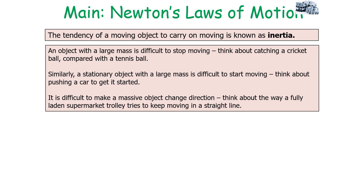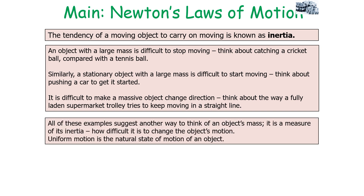The tendency of a moving object to carry on moving is known as inertia. An object with a large mass is difficult to stop moving — think about catching a cricket ball compared to a tennis ball. Similarly, a stationary object with a large mass is difficult to start moving, like pushing a car to get it started. It is also difficult to make a massive object change direction, like a fully laden supermarket trolley trying to keep moving in a straight line. Mass is a measure of an object's inertia — how difficult it is to change the object's motion.